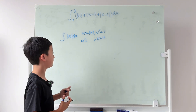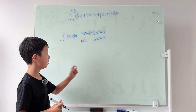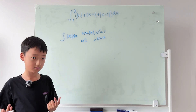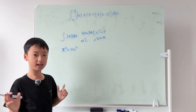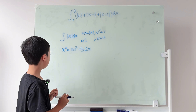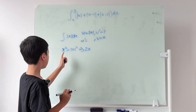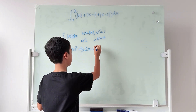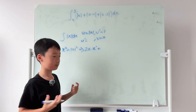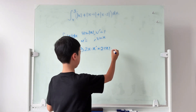To find the derivative of |x|, we use the fact that x² is always positive, so x² equals |x|². Taking the derivative of both sides: the left side gives 2x (times x' by chain rule), and the right side gives 2|x| times the derivative of |x|.